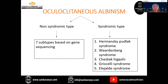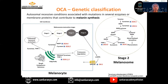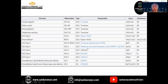The oculocutaneous albinism is divided into two types: non-syndromic and the syndromic type. The non-syndromic is further divided into seven subtypes based on gene sequencing. The syndromic type is further divided into Hermansky-Pudlak syndrome, Waardenburg syndrome, Chediak-Higashi syndrome, Griscelli syndrome, and LHLD syndrome. The oculocutaneous albinism is an autosomal recessive condition associated with a mutation in several enzymes or membrane proteins that contribute to melanin synthesis. Depending on where in the pathway the enzymes are deficient, the subtypes of OCA are divided further. These are the various subtypes of oculocutaneous albinism and the locus where the genetic mutation occurs.